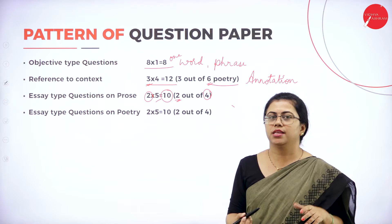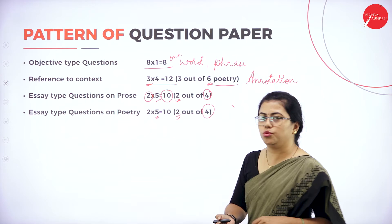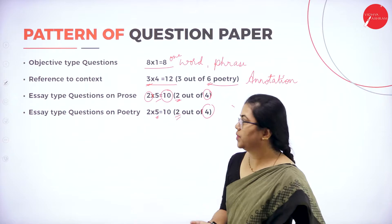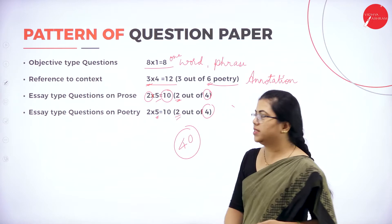Then essay type questions on poetry — similar format: 5-mark questions and you have to answer any 2 out of 4. Both prose and poetry sections will be essay type. So altogether: 8 marks objective, 12 marks annotation, 10 marks prose essays, 10 marks poetry essays — that comes to 40 marks. The remaining portion is the language component.